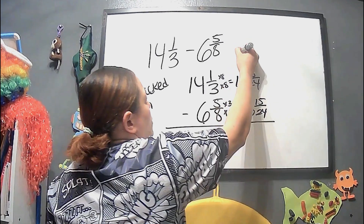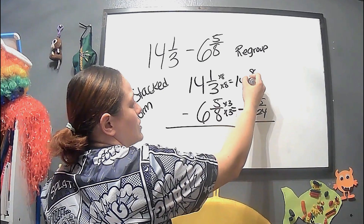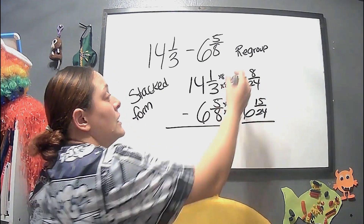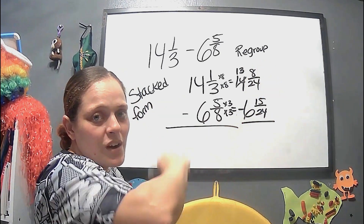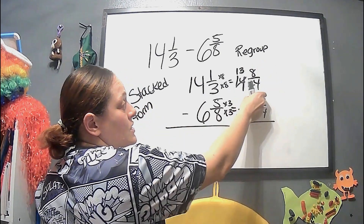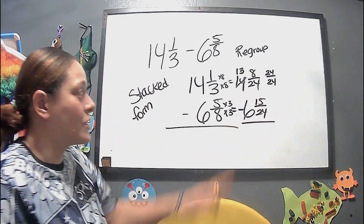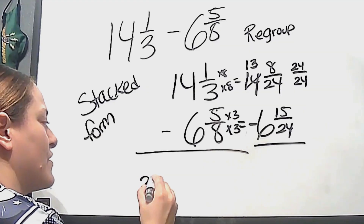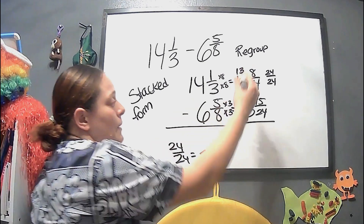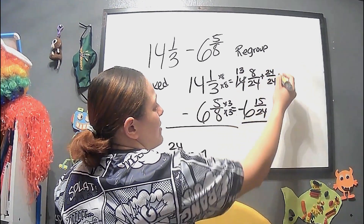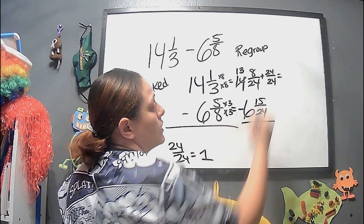Now we have to regroup. When we regroup with mixed numbers and fractions, we take one from the whole number. But because it's a fraction, we use the same denominator — so we write it as 24 over 24, which equals 1. We add that to our fraction: 24 plus 8 is 32, giving us 32 over 24.